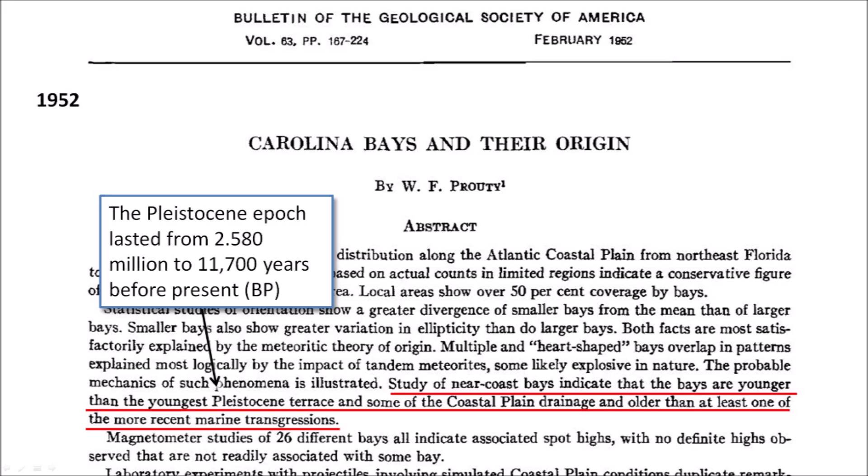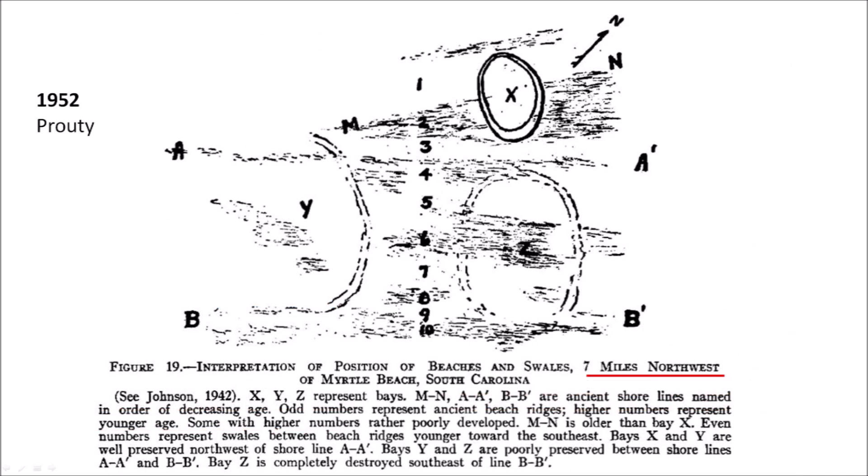Professor Prouty estimated that the Carolina Bays were younger than the youngest Pleistocene terraces, meaning the bays could be about 12,000 years old. He based his estimate on some terraces illustrated in his paper. Figure 19 of Prouty's paper shows Carolina Bays and ancient beach ridges located seven miles northwest of Myrtle Beach, South Carolina. The caption describes Prouty's interpretation of the relative ages.